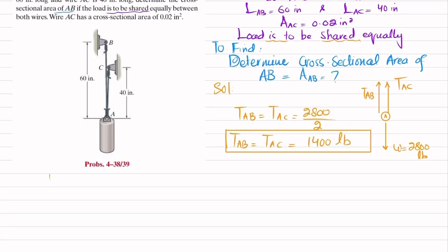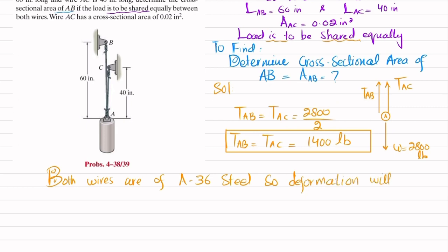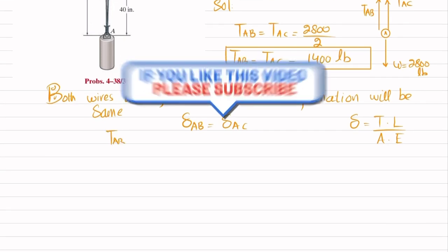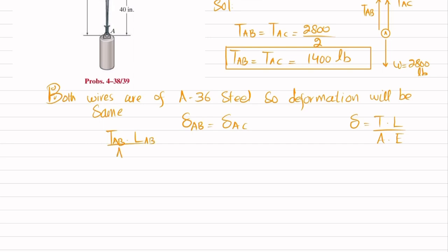Now we have the load in each wire. Since both wires are made of A36 steel, and the load is also the same, the deformation will be the same in both. So deformation of AB equals deformation of AC. We know deformation equals load times length divided by cross-sectional area times E. So: T_AB × L_AB / (A_AB × E) = T_AC × L_AC / (A_AC × E).